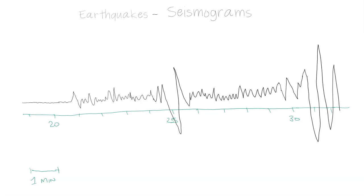The P wave is the primary wave — it's the fastest. Once the earthquake happens at the focus or hypocenter, it's going to radiate and propagate out in all directions. The second the earthquake happens, all these waves are released. The P wave is the fastest and will get to the seismic station where it's recorded first.